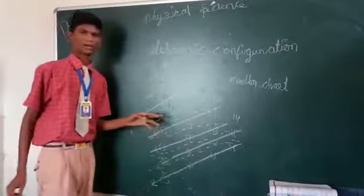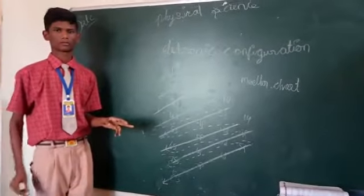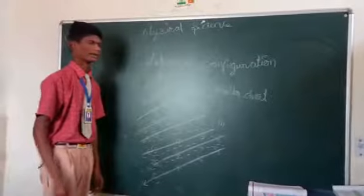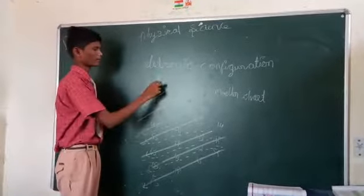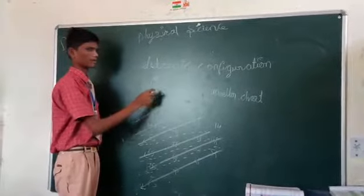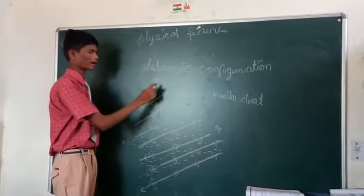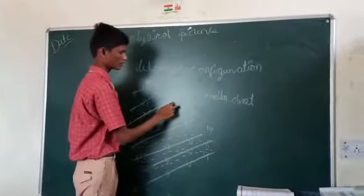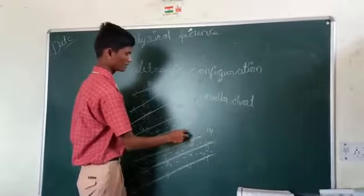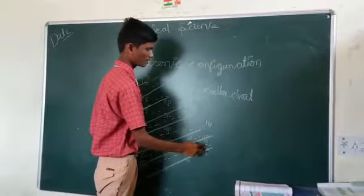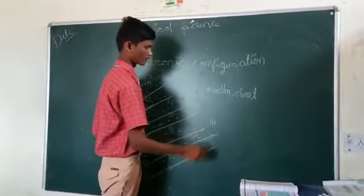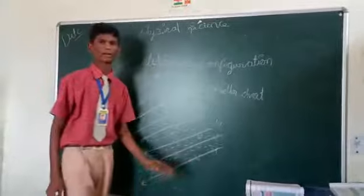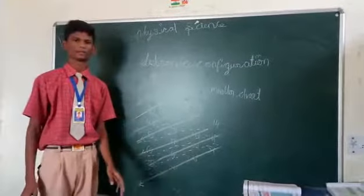In the sub-shells, we have 2 electrons, 6 electrons, 10 electrons, and 1 electron. With these electrons, we have to divide the elements.